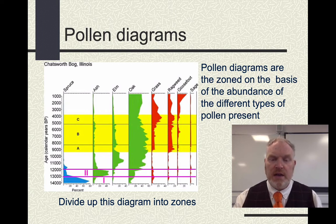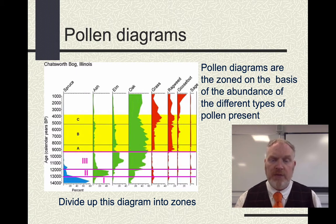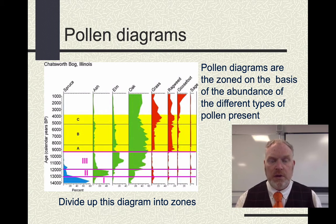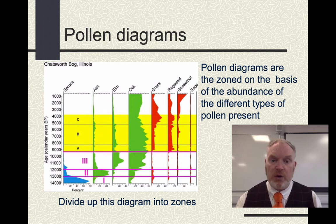That doesn't stay stable for long. The ash numbers drop, and I've put zone three there, where ash is being replaced by elm and an increasing amount of oak. So we're up now to about 9,300 years ago, and we have a broad-leafed deciduous woodland. Clearly climatic conditions are quite temperate, probably quite similar to what we see today.